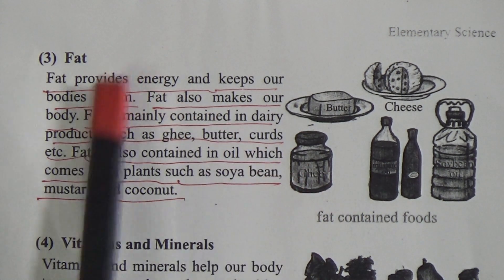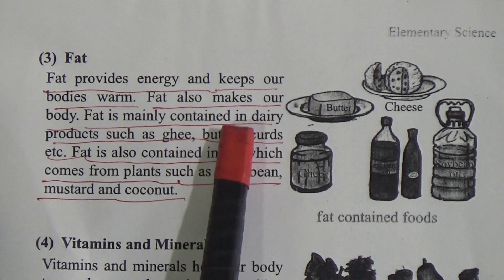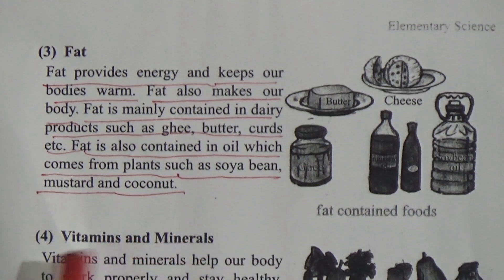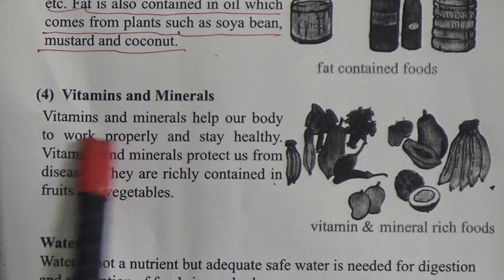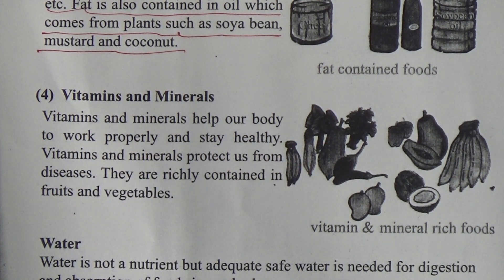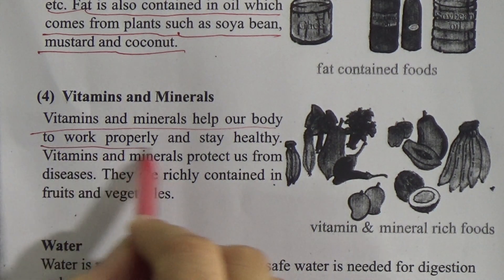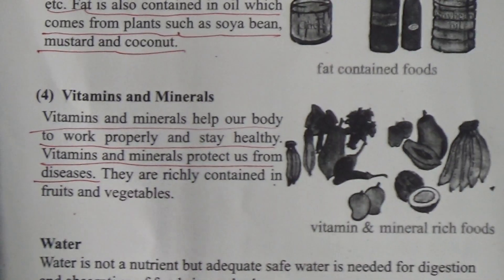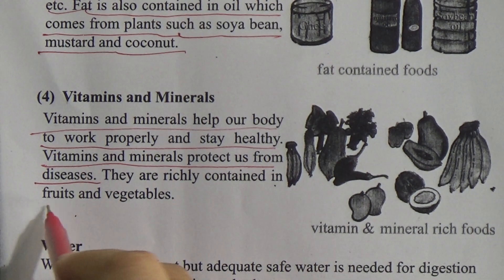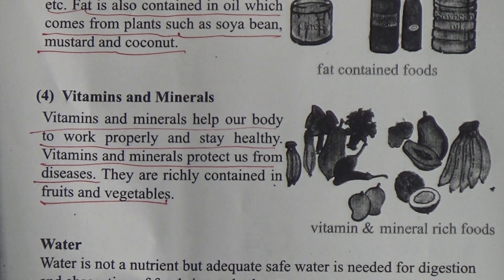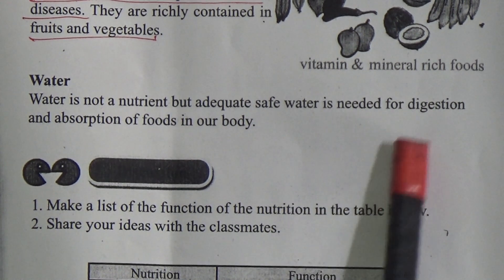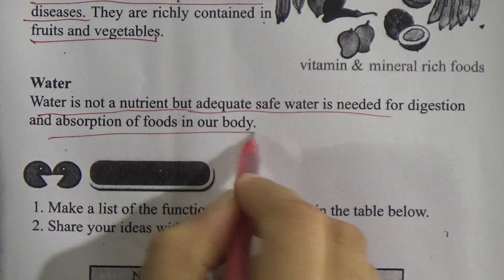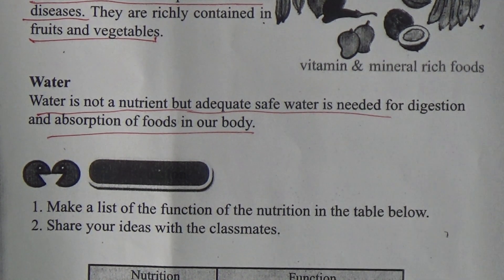Vitamins and minerals help our body to work properly and stay healthy. They protect us from diseases. They are richly contained in fruits and vegetables. Water is not a nutrient, but adequate safe water is needed for digestion and absorption of food in our body.